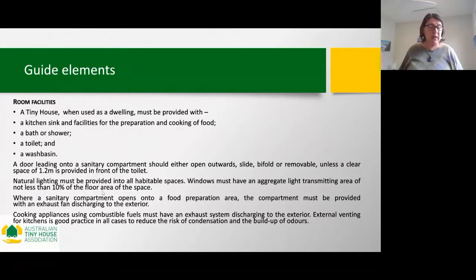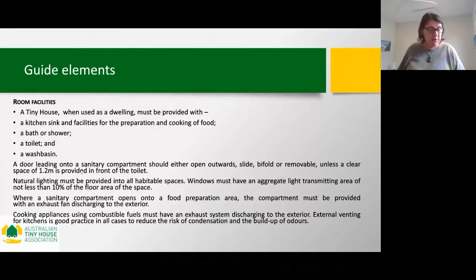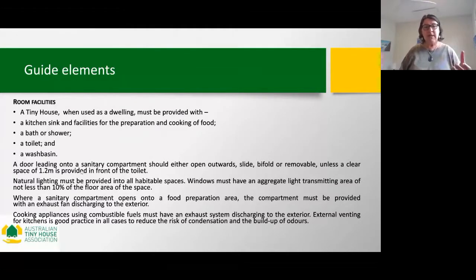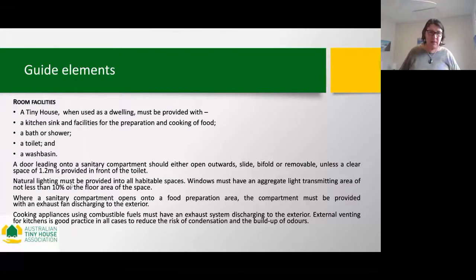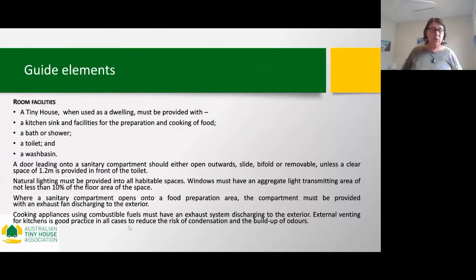A dwelling needs to include a kitchen with food preparation facilities, a shower, toilet, wash basin, and optionally a washing machine. From a safety perspective, there must be at least 1.2 metres in front of the toilet or shower so that if someone has a heart attack and falls, the door can still be opened to reach them. Most tiny house builders use sliding or bifold doors, since opening doors waste space. We also require 10% of the floor area to be lit, exhaust fans in sanitary areas adjacent to kitchens discharging to the exterior, and cooking appliances using combustible fuels exhausted outside.